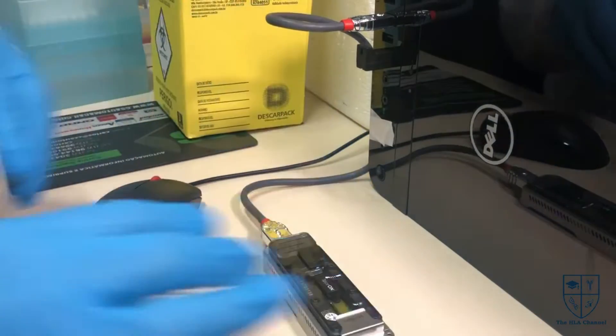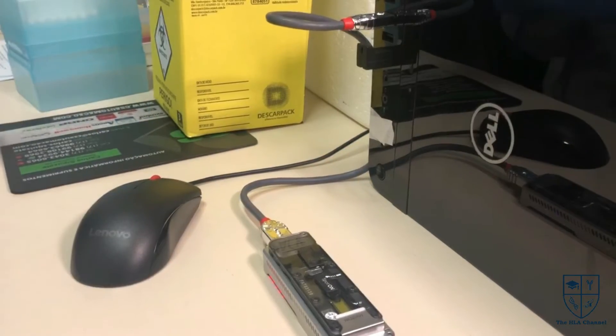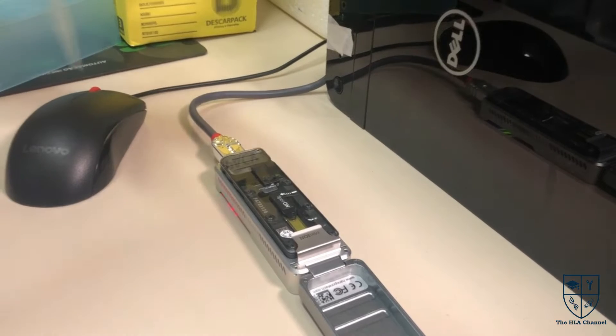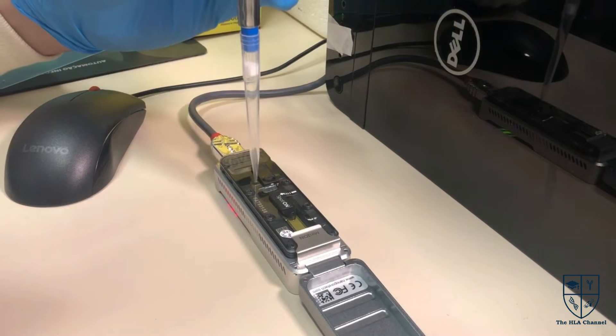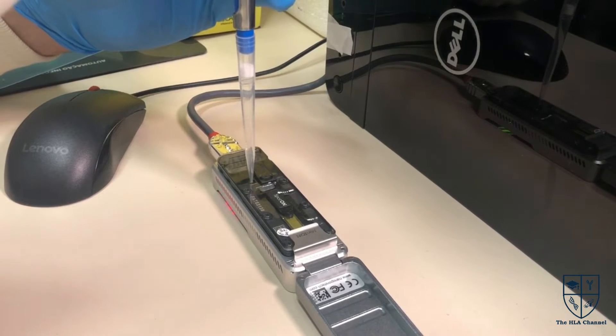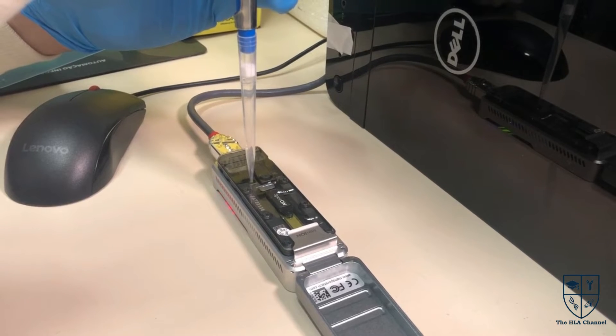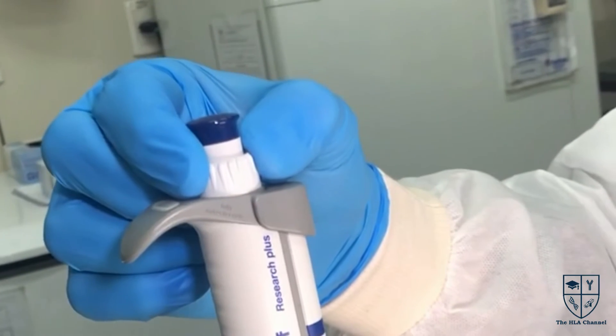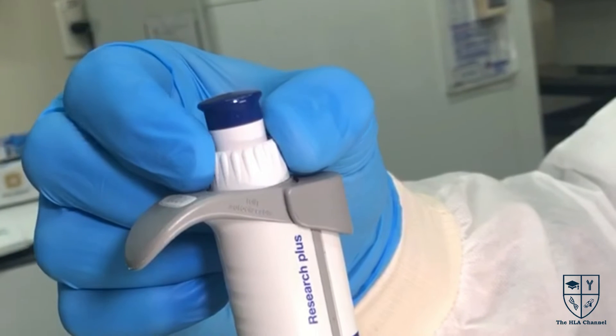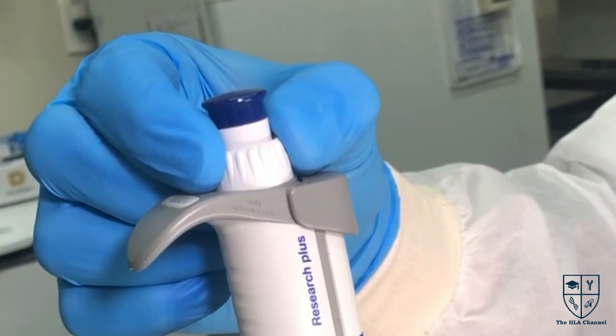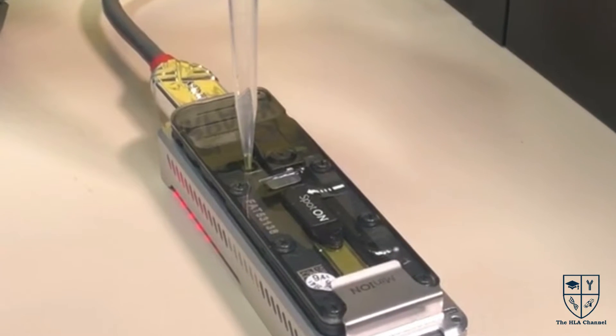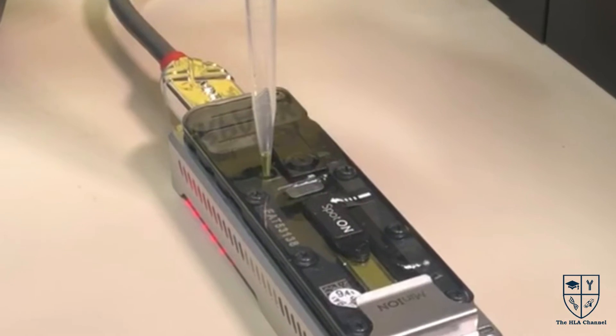Slide the priming port cover clockwise to open the priming port. Draw back a small volume to remove any bubbles from the system. Set a P1000 pipette to 100 microliters, insert a pipette tip into the priming port, and turn the wheel until the dial shows 120 to 130 microliters, or until you can see a small volume of yellow colored buffer entering the pipette tip.